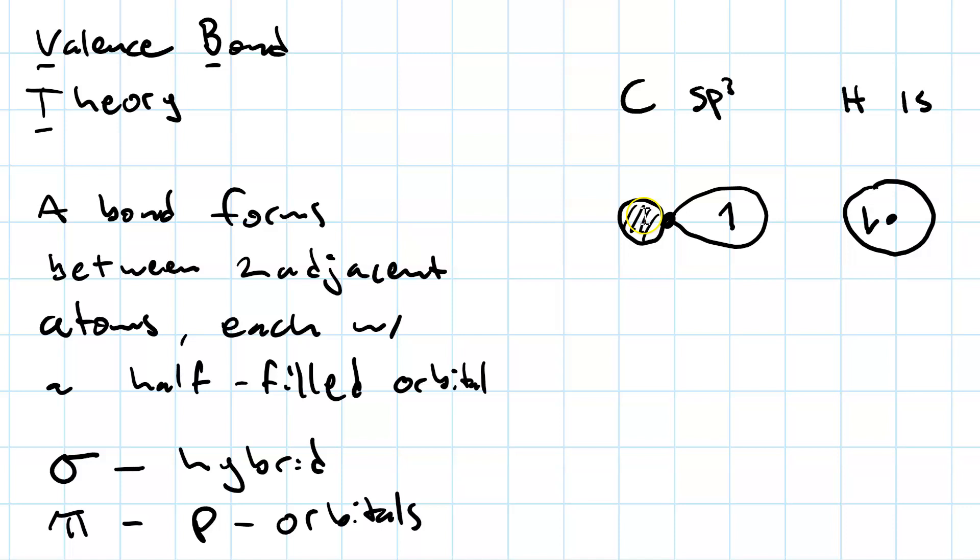So say we have a carbon sp3 orbital with a single electron in it, and a hydrogen 1s orbital with a single electron in it, and we bring those two together, they overlap. Now we have a bond, and this is a sigma bond, and it's from sp3 to s.